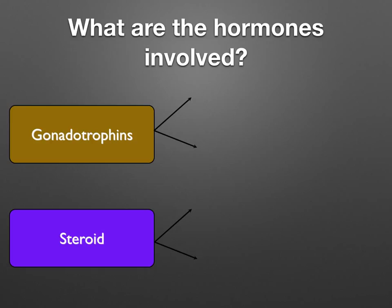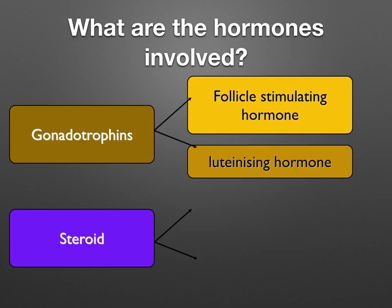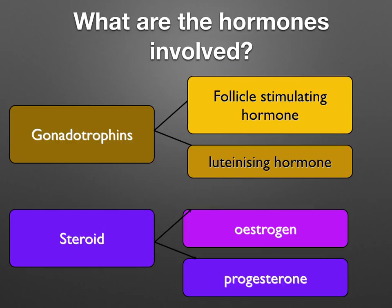The different hormones involved are gonadotrophins and steroid hormones. Gonadotrophins include follicle-stimulating hormone (FSH) and luteinizing hormone (LH), both of which are secreted from the pituitary gland. The steroid hormones are also called sex hormones and include oestrogen and progesterone.